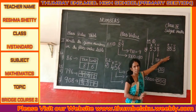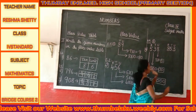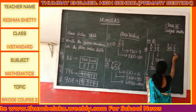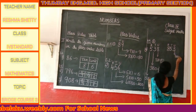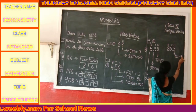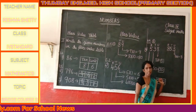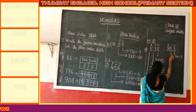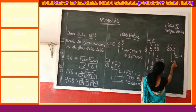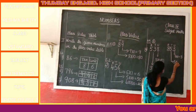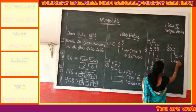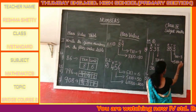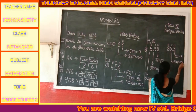Now coming to the original number 538. Here 3 is in the unit place, so 3 multiplied by 1 equals 3. The place value of 3 is 3. 5 is in the tens place, so 5 multiplied by 10 gives the place value of 50.